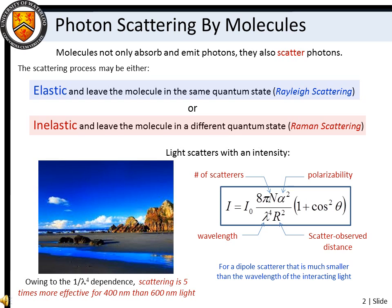Elastic, or Rayleigh scattering of light, leaves matter in its original quantum state. Inelastic, or Raman scattering of light, results in a change in molecular quantum state during the course of the scattering process.